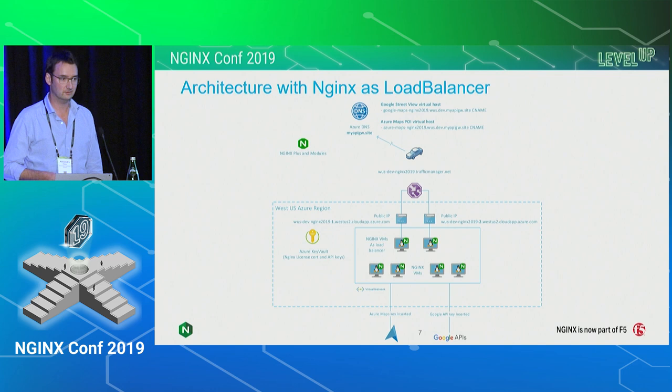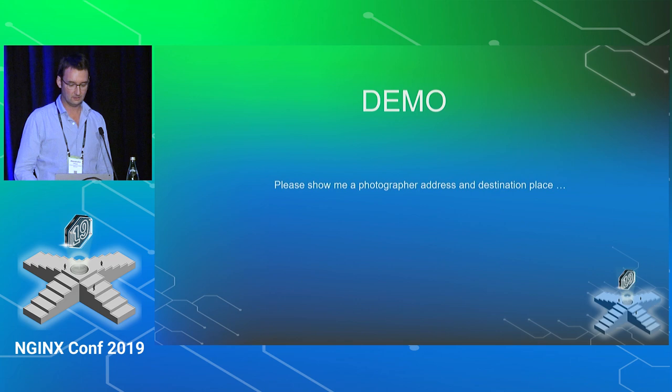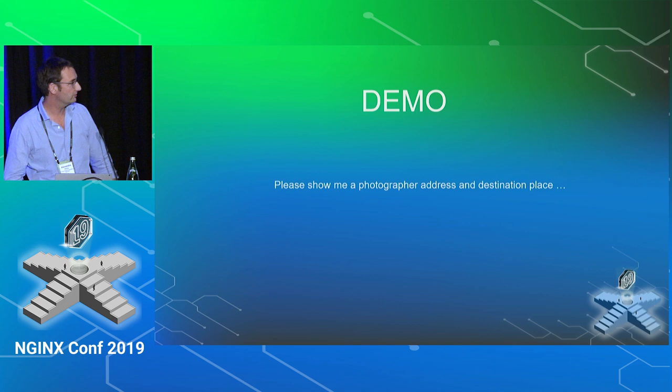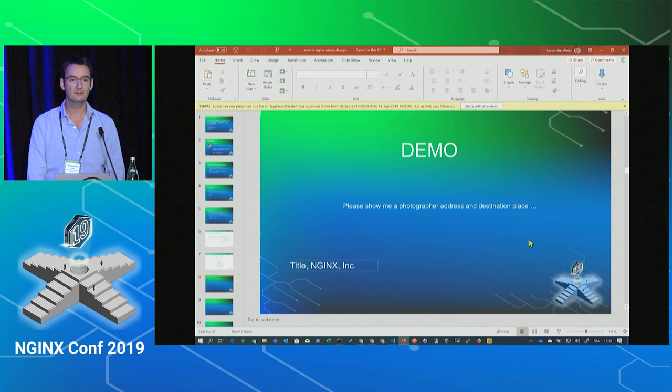I'll spend most of the time on a demo. The use case is: please show me a photographer's address and destination place. If you have any questions, don't hesitate to interrupt me. I already deployed one architecture in West US dev, and it's up.